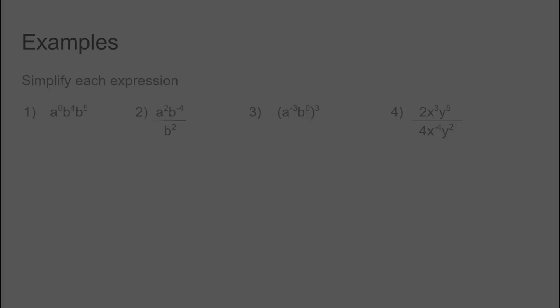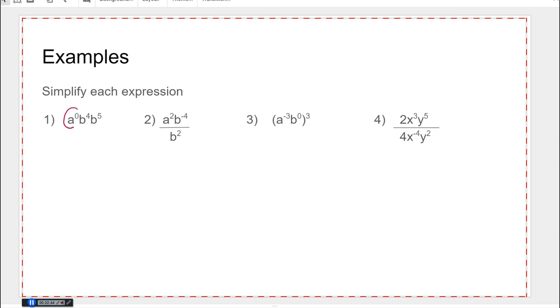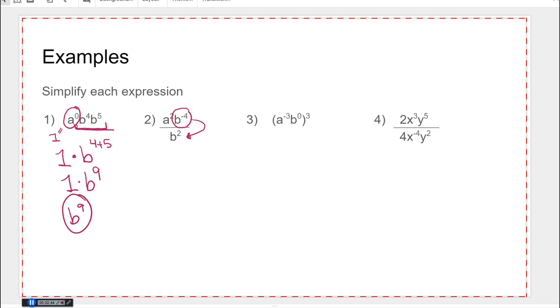The last thing we're going to do is mix up all the rules. First, looking at a to the zero power times b to some powers: a to the zero is one, and when multiplying with the same base we add exponents, so we get one times b to the ninth, or just b to the ninth. For problem two, there's nothing to do with a to the second. Using the negative exponent rule, move the base b to the bottom — a squared stays on top, b squared stays on bottom, the extra b moves to the bottom and its exponent turns positive — giving a squared over b to the sixth.